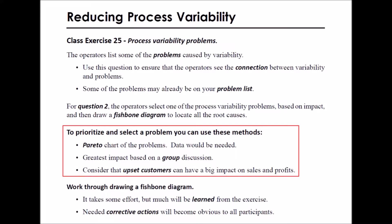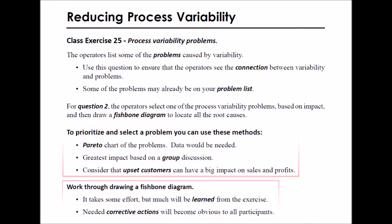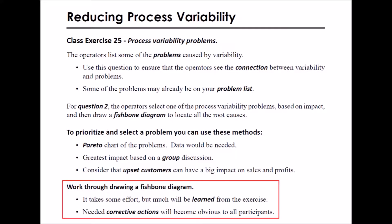To prioritize and select a problem, you can use these methods: a Pareto chart of the problems, or determine which problem has the greatest impact based on group discussion, taking into consideration that upset customers can have a big impact on sales and profits. Work through drawing a fishbone diagram — it takes some effort, but a lot will be learned from the exercise, and the proper corrective actions will become obvious.